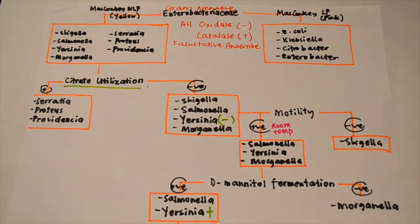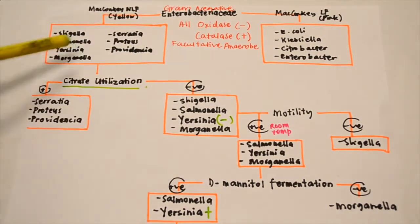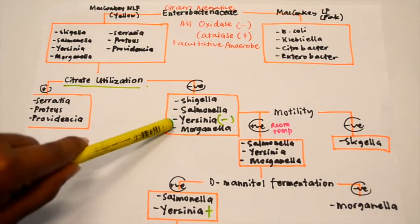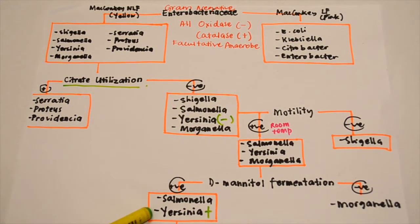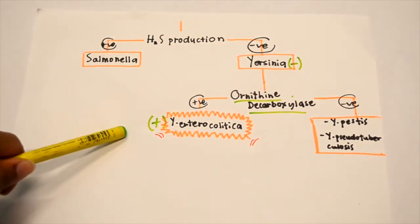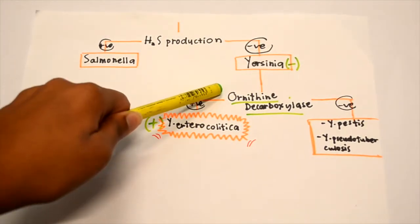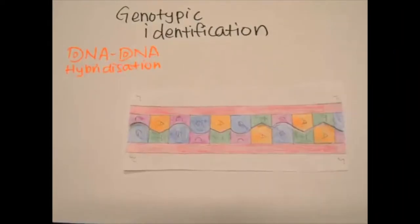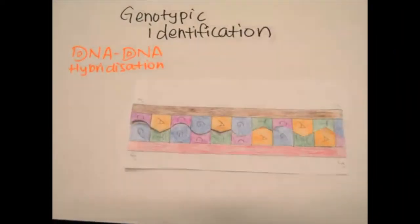Citrate utilization is one such biochemical test. Yersinia is unable to utilize citrate, however it is able to ferment mannitol. The last step to identifying the genus of Yersinia will be that it is not able to produce hydrogen sulfide. To finalize the species Yersinia enterocolitica, we look at its ability to decarboxylase ornithine, or we can also identify the homologous sequences of the bacterium's DNA.